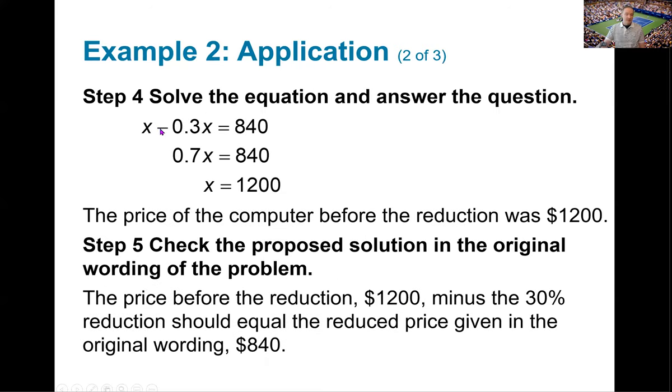Now that allows me to solve for what the original price would have been. x - 0.3x just gives me 0.7x. So we know we paid 70% of the original retail price for the computer. What was that original retail price? Well, in order to solve for x, you divide by 0.7 on both sides. 840 divided by 0.7 gives me 1200. Now I know that the price of the computer before the reduction was $1,200.